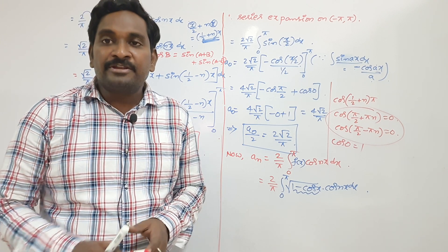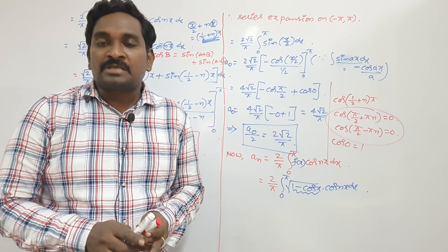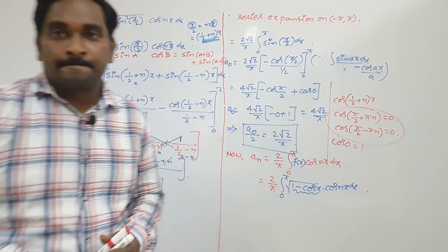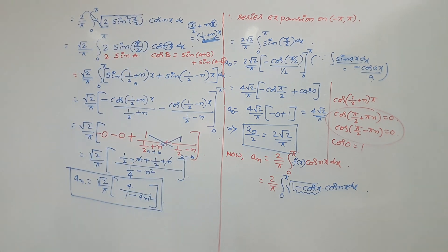This is the way to find the Fourier series expansion when the given interval is minus pi comma plus pi. In the next video, I will give some more examples. Thank you very much.